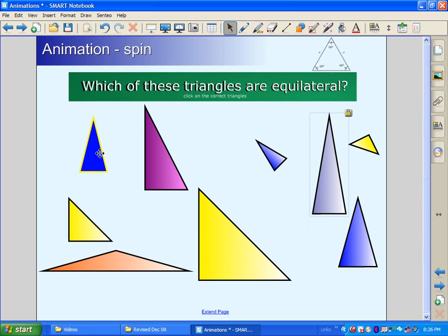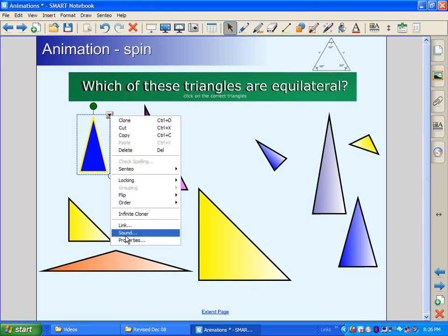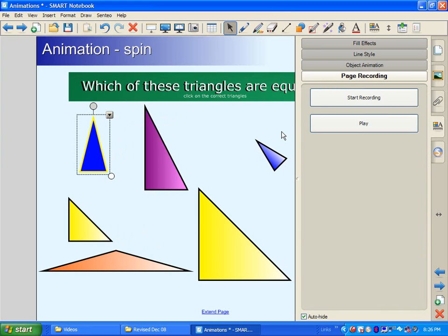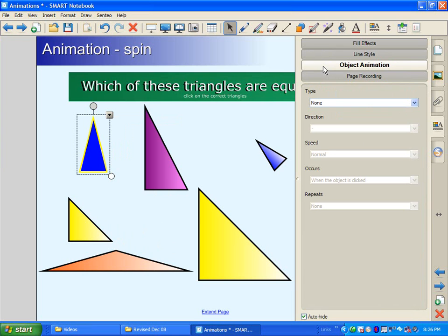You can click on any object, whether it be a shape, text, a graphic, or an image, and you can click on the drop-down arrow and go to Properties. The Properties window will appear on the right-hand side, and you click on Object Animation. Then you can select what type of object animation you would like. So this one, we will hit Spin.